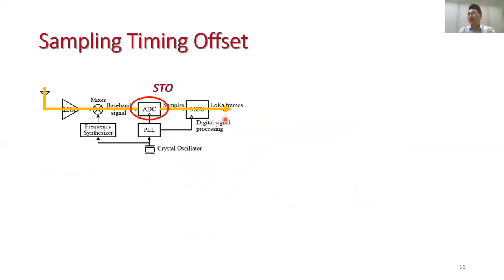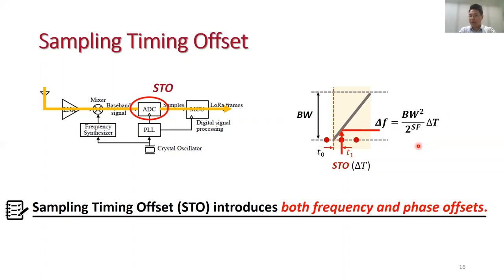Next, let's look at the signal sampling of ADC. Suppose this is the arrival time of the chirp signal, which is T0, and the receiver samples at discrete time. This time offset is called sampling timing offset. Remember that the frequency of a chirp signal changes with time, and this time offset will actually transform into a corresponding frequency offset. So as a result, STO can introduce both frequency offset and phase offsets. In practice, we can compare a received base chirp with a standard base chirp to estimate the frequency offset of STO.